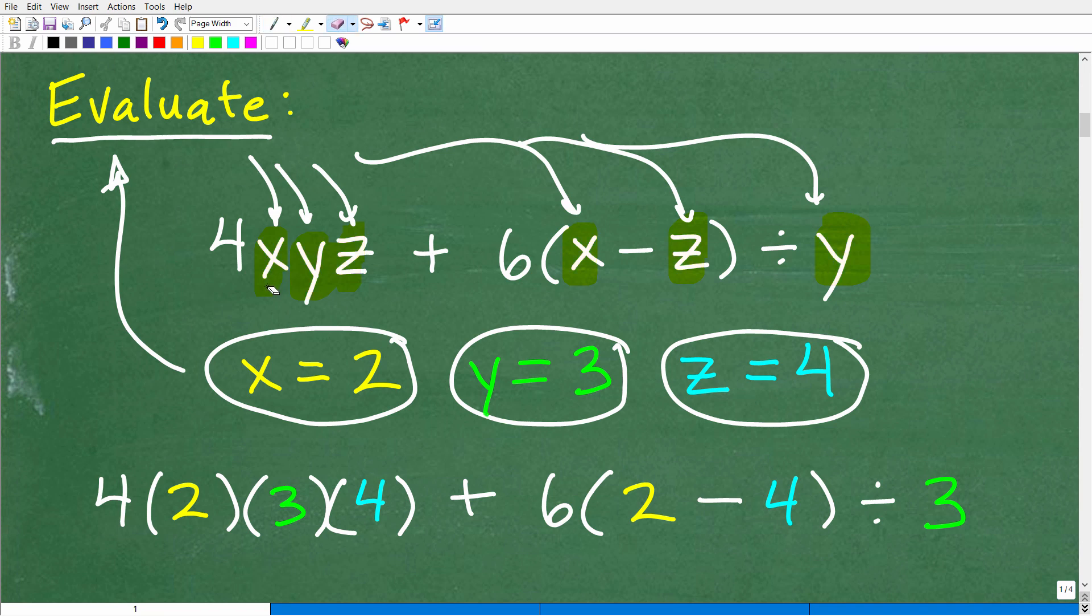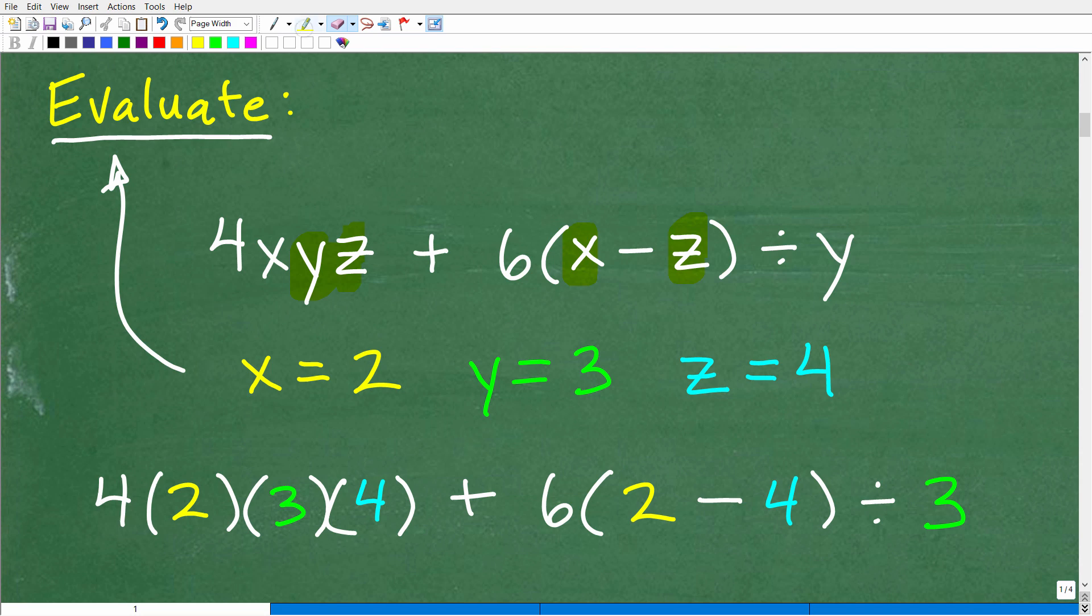So step number one is to replace the respective variables with the values assigned. So let's make sure that no one is lost here. We'll take this one at a time. So here we have 4 times x. So x is equal to 2, so we're going to replace that x with a 2. And you can see that I did this in a nice color-coded kind of way, so hopefully this is extra clear. Then y is what? Well, that y is 3, so we have a 3 right there. And this is all multiplication in algebra when you have variables written next to one another like x, y, z. This means multiplication x times y times z. So z is 4, so we have a 4 right there. So this is going to be 4 times 2 times 3 times 4 plus 6 times parentheses. This is very important. You've got to keep the parentheses. X is 2 minus z. Z is 4, and parentheses divided by y. And y is 3, so we'll put our 3 right there.